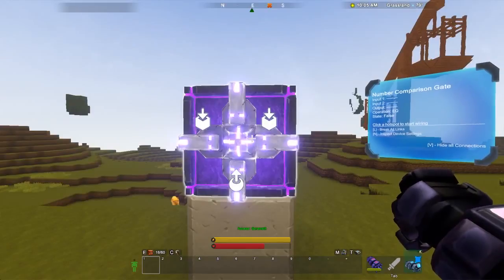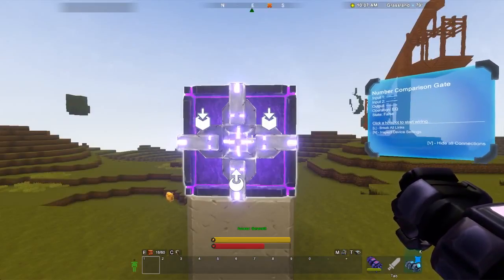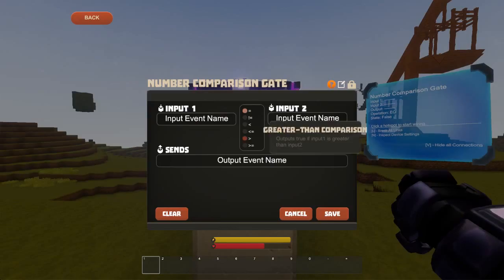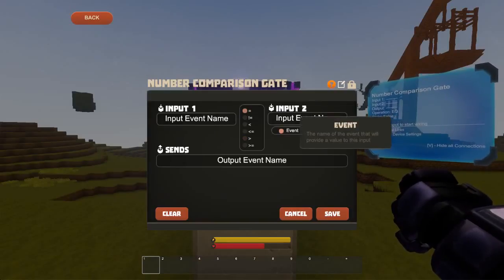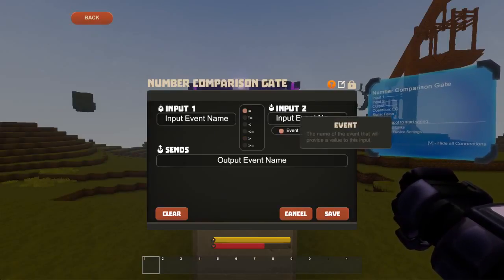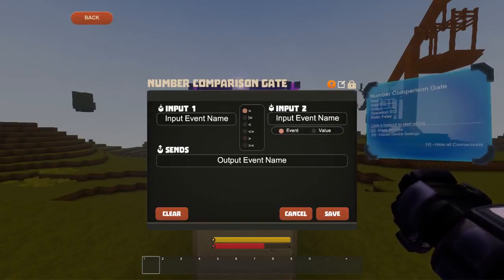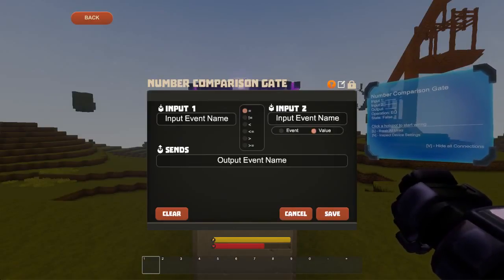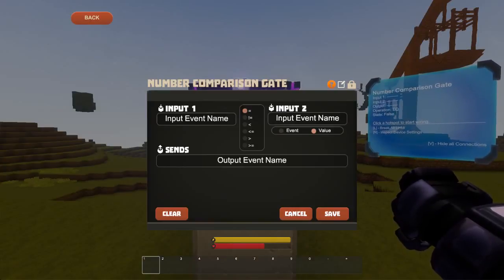So far, we've pretty much hashed out everything we can find out about the number comparison gate as an event handler. But you probably already know the number comparison gate as something that handles values. We'll be looking at that aspect of the number comparison gate and its companion, the number pad next time.